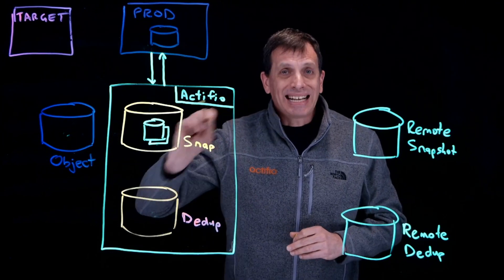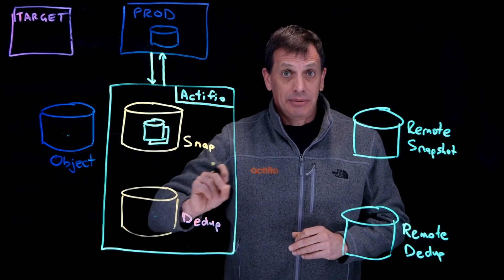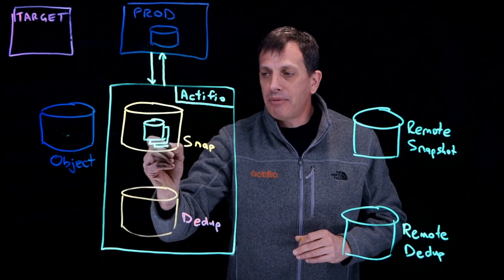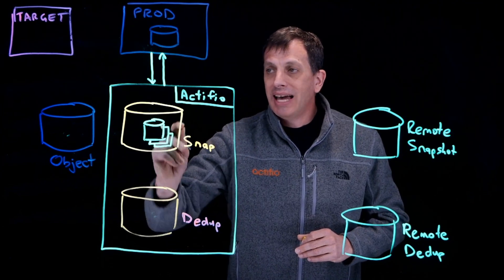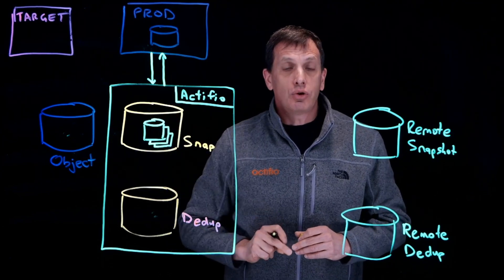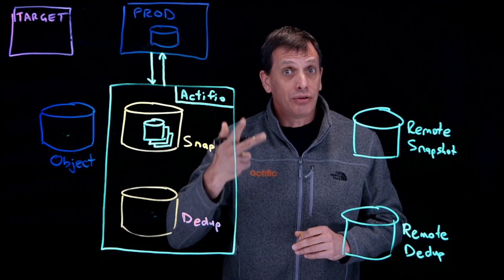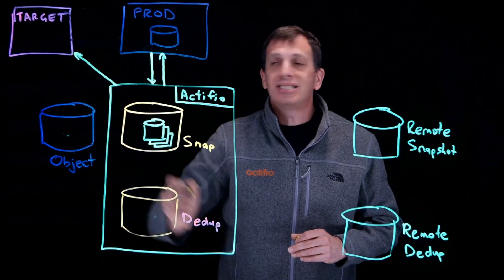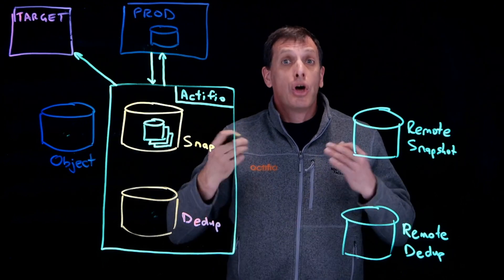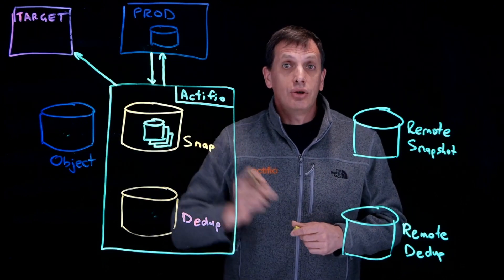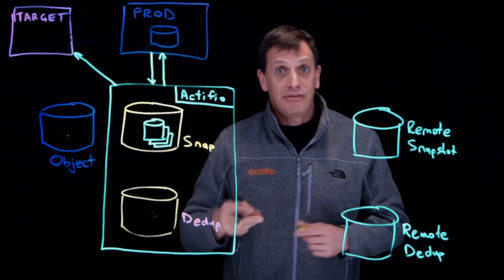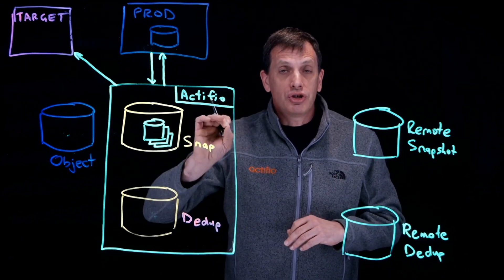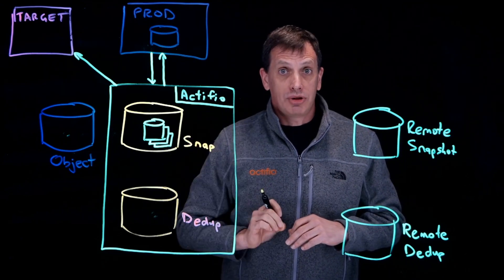Now if you want to access this data using our mount technology — all instant — then we make a snap of the snap and again using those same interfaces, NFS, iSCSI, or fiber channel, the Actifio appliance presents that staging disk to a target host who can access it instantly and start using that data for test and dev, recovery, or whatever you like. So this is how a traditional internal snapshot pool works.